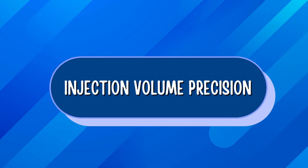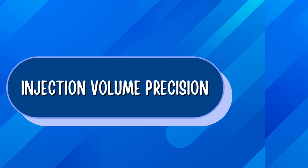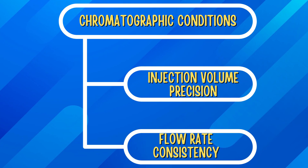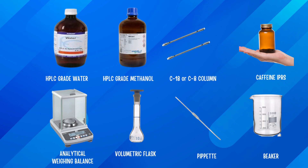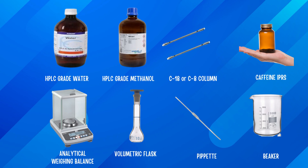Now in the second parameter, we will understand how to perform injection volume precision. The chromatographic conditions required to perform injection volume precision are the same as required for flow rate consistency performed during pump calibration. To determine injection volume precision, we require HPLC grade water, HPLC grade methanol, C18 or C8 column, Caffeine IPRS, analytical weighing balance, and glassware such as 100 ml volumetric flask, 1 ml pipette, and beaker for dilution.